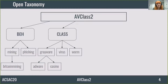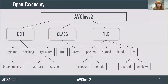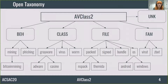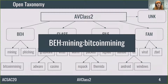Another category is class, which captures characteristics such as behaviors or distribution methods. File comprises static file properties like file type or operating system in which the sample operates. The fourth category is the family of the sample. If the AV label contains a tag which is not included in the taxonomy, we keep it as an unknown tag, since it could have valuable information. This way, tags are leaves under a category like phishing, or they are intermediate tags like mining, which is a behavior, but there is a more specific term: bitcoin mining. For this reason, a tag can also be represented with its whole path in the taxonomy.